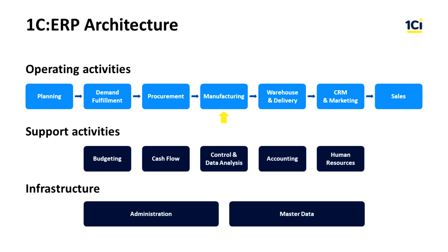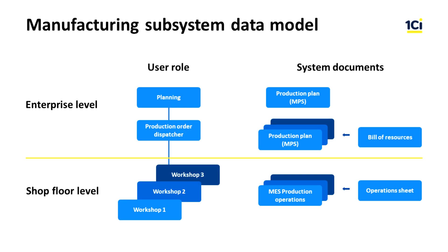The manufacturing subsystem helps to manage the production process at different levels of complexity — from a simple one-stage process to a rather complex hierarchical process. Production management operates at two levels: the enterprise level, at which we create a production plan, form production orders, calculate the production schedule, and divide the process into stages; and the shop floor level, at which we plan production operations within stages. Here we can use the MES methodology, i.e., manufacturing execution systems methodology. The manufacturing subsystem uses MRP-2 principles, i.e., manufacturing resource planning.